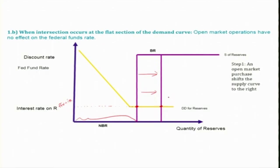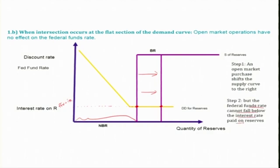As a result of the open market purchase, the supply curve — the NBR curve — has shifted rightwards, but the Fed fund rate cannot fall below the interest rate paid on reserves. So there is no change in the Fed fund rate. What if the Fed engages in an open market sale instead of a purchase?